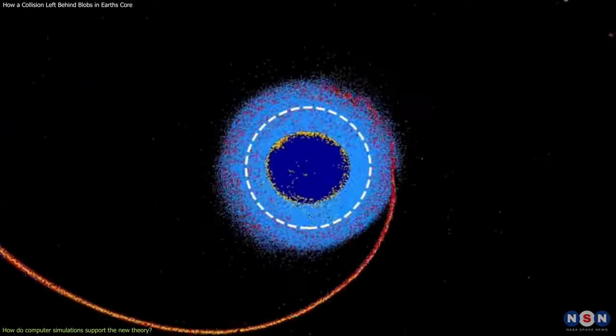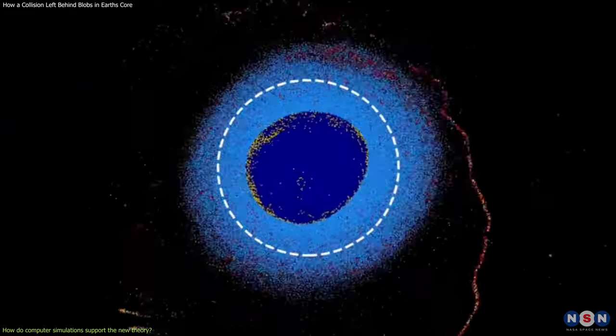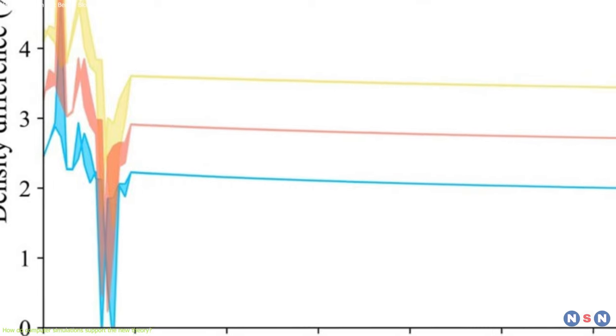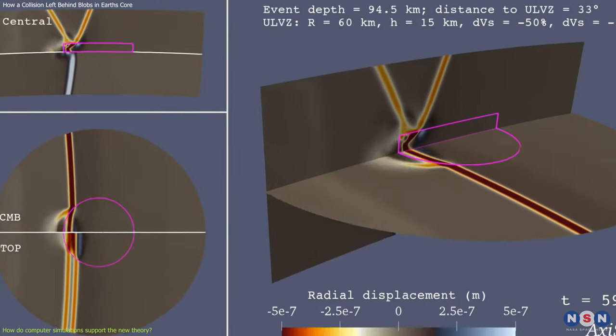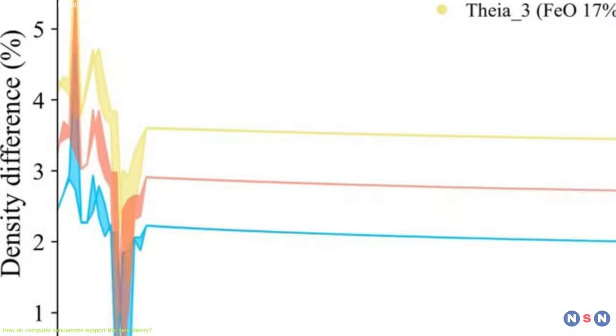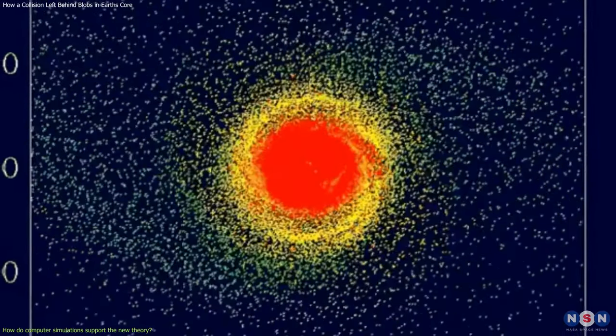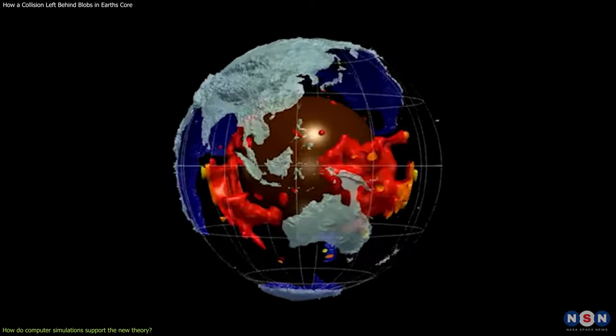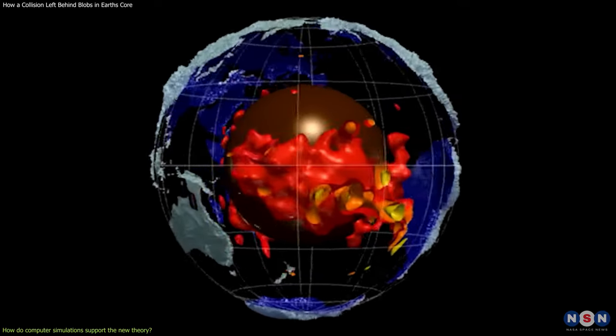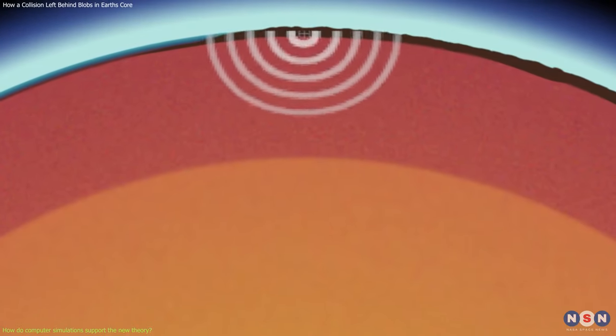Moreover, they showed that the material that fell back to Earth could have different physical and chemical properties than the rest of the mantle, such as lower seismic velocity, higher density, higher iron content, and higher temperature. These properties are consistent with the measurements and estimates of the LLVPs from seismic and geodynamic studies.